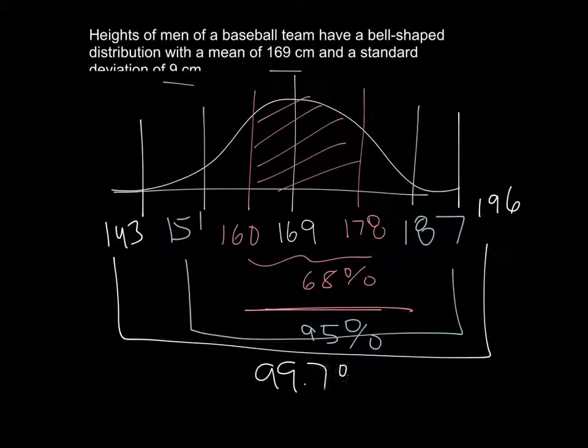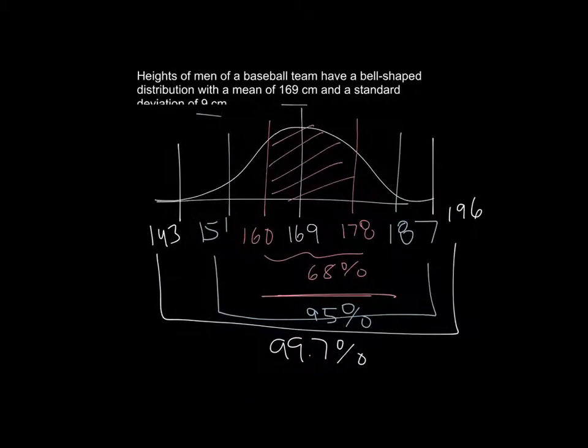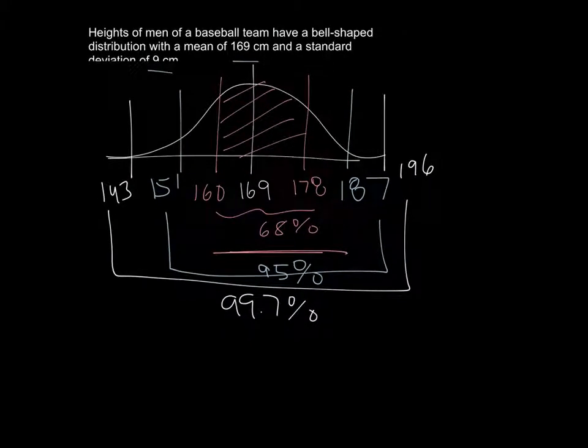So if we have a question that says find the percent of the men that are between 142—I'm sorry, I wrote 143 and that should have been 142—are between 142 and 196, I can see that's going to be this 99.7% by the empirical rule.